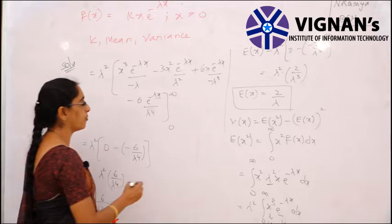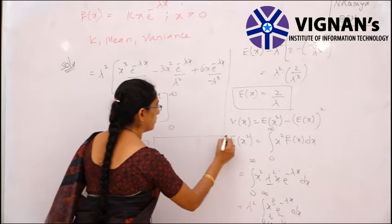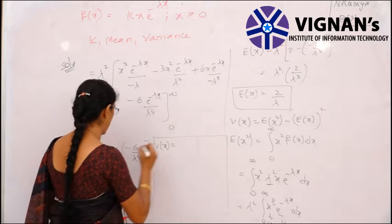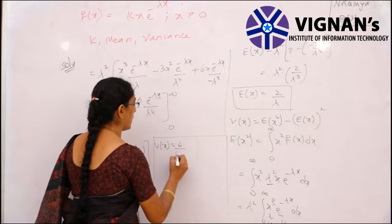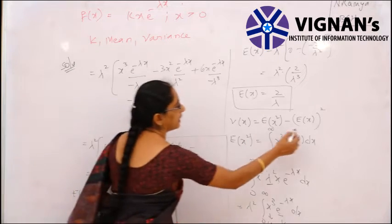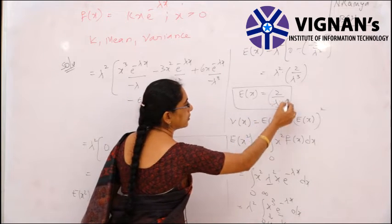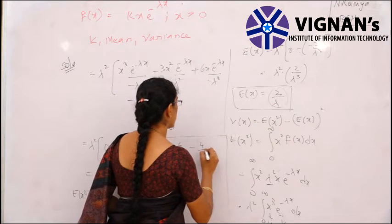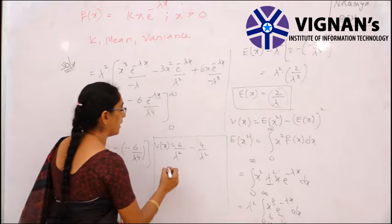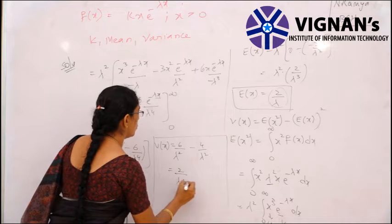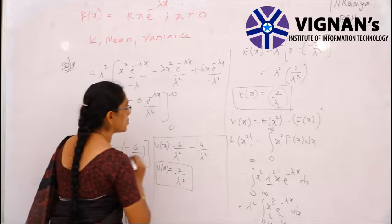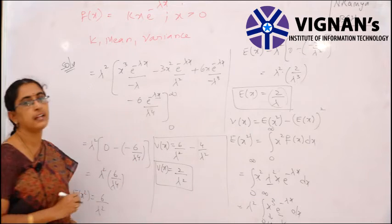Substituting into the variance formula: Var(X) = E[X²] − (E[X])² = 6/λ² − (2/λ)² = 6/λ² − 4/λ² = 2/λ². So the variance of this function is 2/λ².